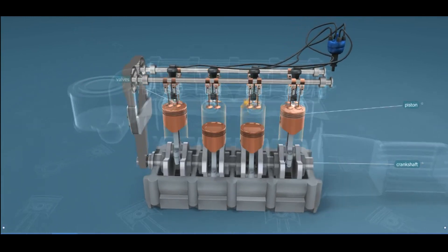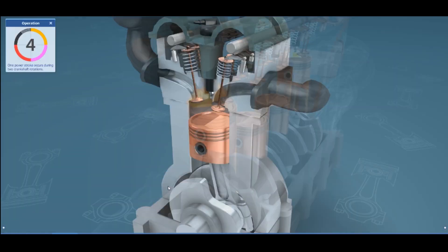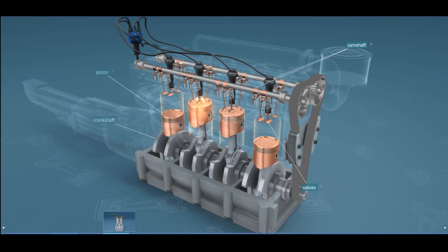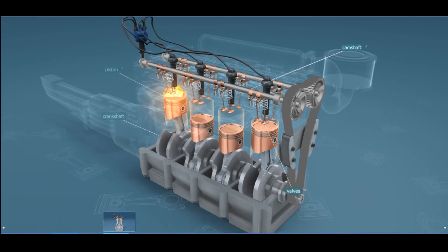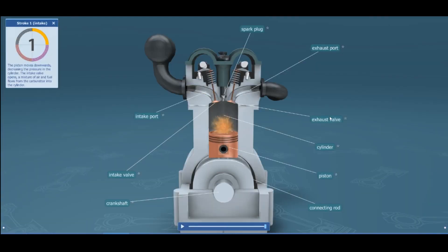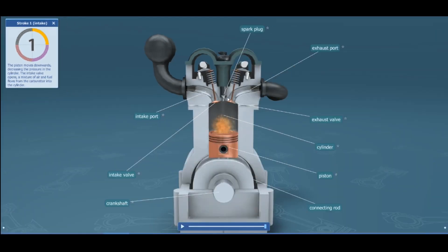The fuel used in the four-stroke auto engine is petrol — regular gasoline. Now we'll go into how the motor operates. There are four strokes. Stroke number one is the intake stroke: the piston moves downward, decreasing the pressure in the cylinder, the intake valve opens, and a mixture of air and fuel flows through the carburetor and into the cylinder. You can see the piston going down, taking in that mixture of air and fuel.